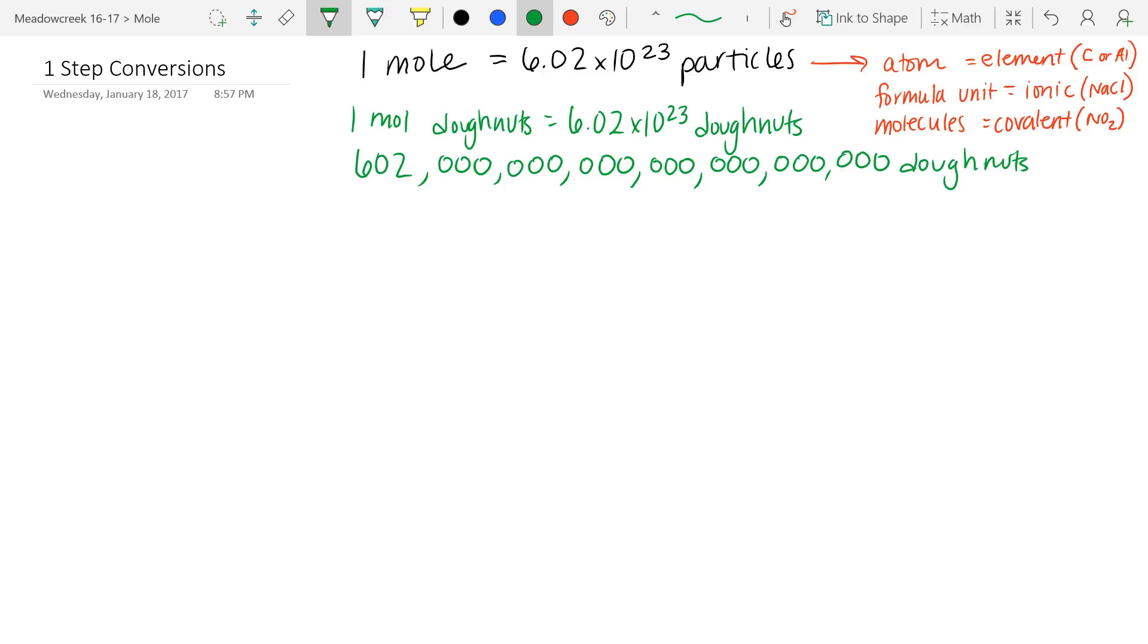So we've got our conversion factor here. One mole is equal to 6.02 times 10 to the 23 particles. Now, that number has a special name, and that name is going to be called Avogadro's number.